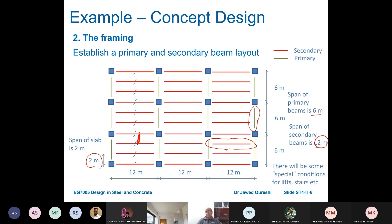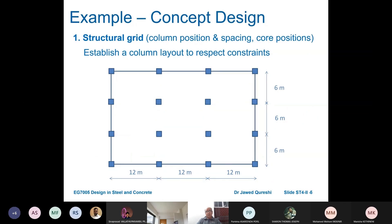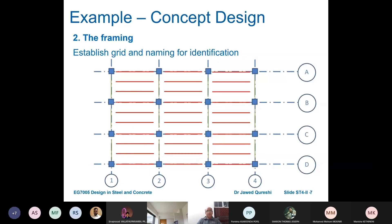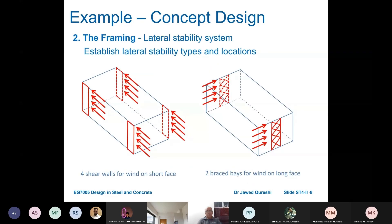There will be special conditions for lifts and stairs. We have decided about the framing — how we are going to place primary and secondary beams. First, we decided about the grid: column positions, spacings, and core positions. Then we establish the grid with naming identification — A, B, C, D — so we know which beam or column we are designing. In framing, we also need to put bracing as the lateral stability system, defining stability type and locations.